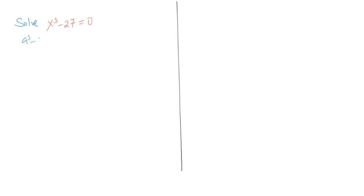To be able to solve this particular equation we are going to use the identity a cubed minus b cubed is equal to a minus b, into a squared plus ab plus b squared. That's the identity we are going to use, and for that reason we will rewrite x cubed minus 27 as x cubed minus 3 cubed is equal to 0. Of course, 3 cubed is equal to 27.